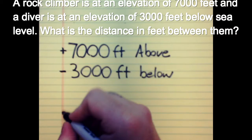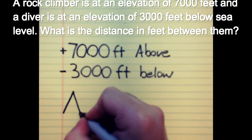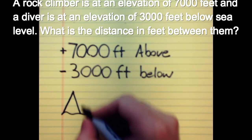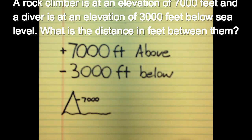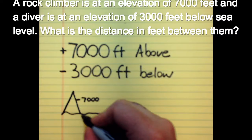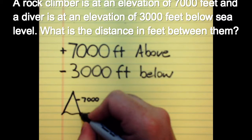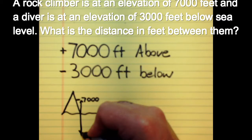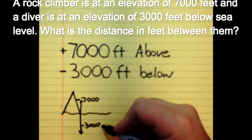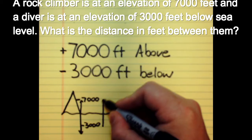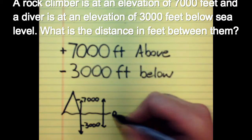So if you have a mountain and sea level, then you have this person at 7,000, and then we have a diver that is going to be below sea level, and they're going to be at 3,000. Okay, so we've got to find the difference between here to here, and we know that sea level is zero.